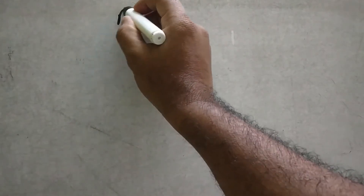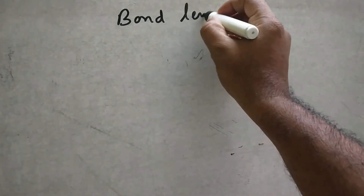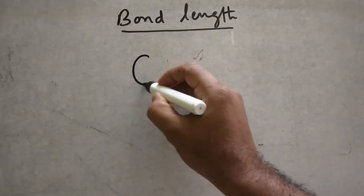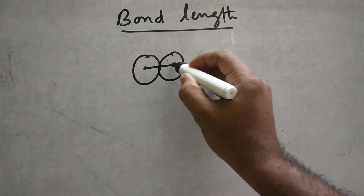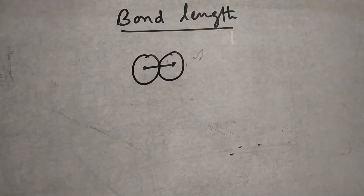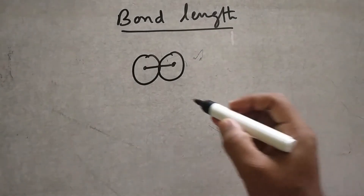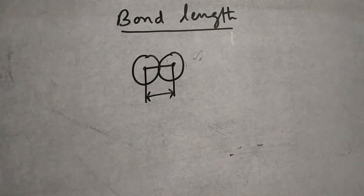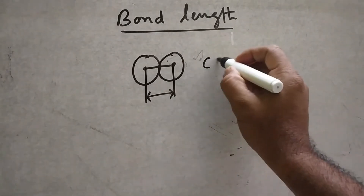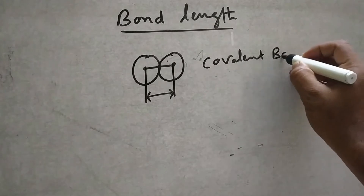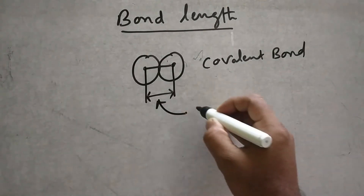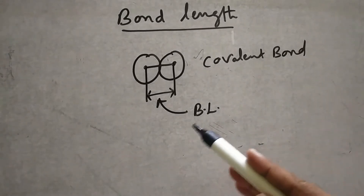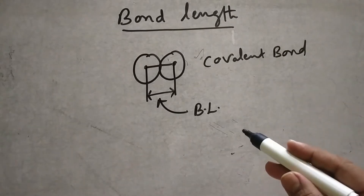First, bond length. Suppose two atoms are covalently bonded — hydrogen-hydrogen, two carbons, or two chlorines. The inter-nuclear distance, that is the distance between one nucleus and another nucleus, after the covalent bond is formed, the distance between those two atoms is called bond length.